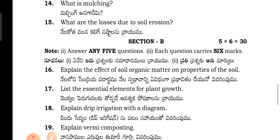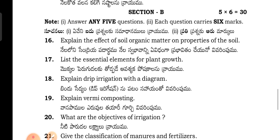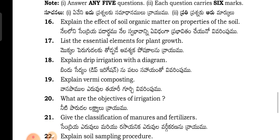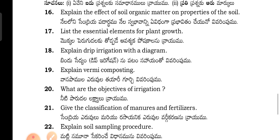Section B questions: Explain the effect of soil organic matter on the properties of the soil. List the essential elements for plant growth. Explain drip irrigation.